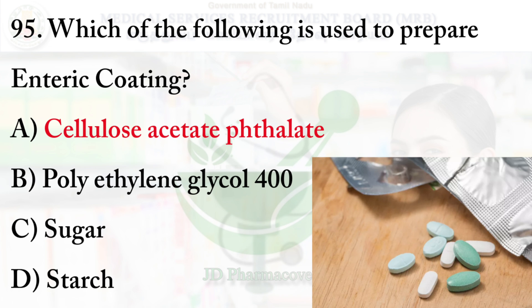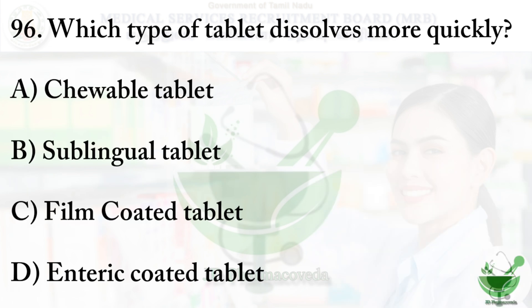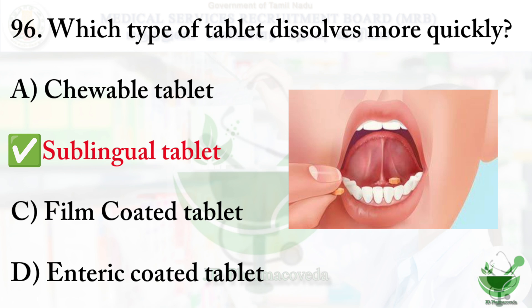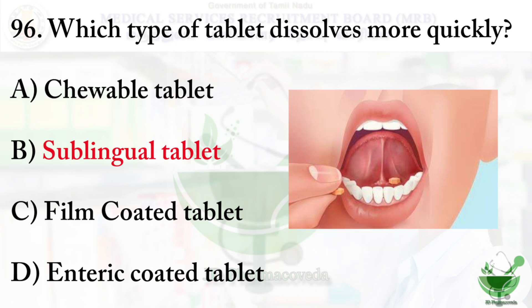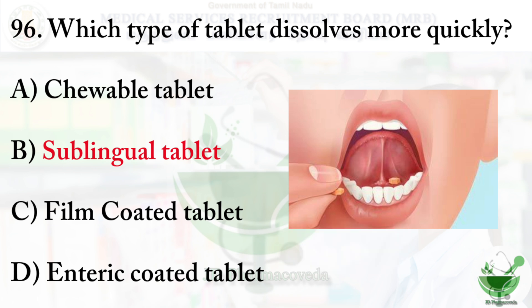Question number 96: which type of tablet dissolves more quickly? Options: option A — chewable tablet, option B — sublingual tablet, option C — film-coated tablet, option D — enteric-coated tablet. The right option is option B: sublingual tablet. It is placed under the tongue — for example, for chest pain, isosorbide dinitrate is used. This sublingual tablet has a two-minute disintegration time, so it dissolves more quickly.